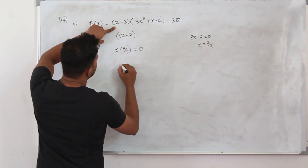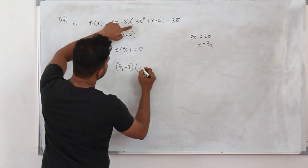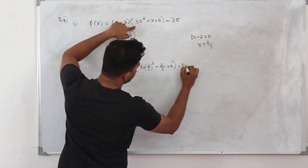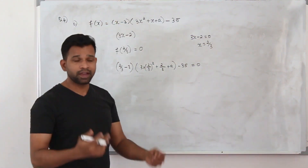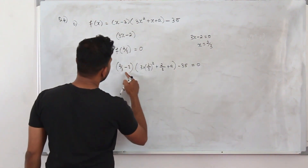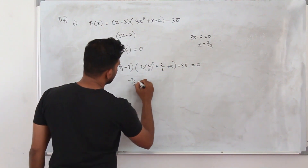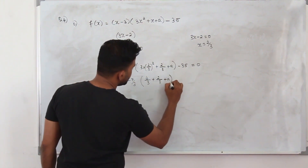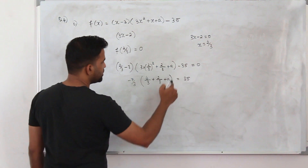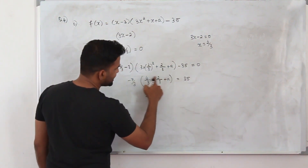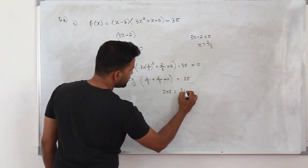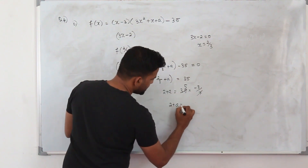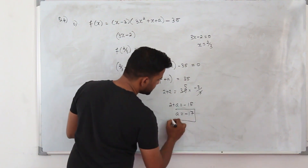Replace x with 2/3 everywhere. It becomes (2/3 minus 3) times (3 times (2/3)² plus 2/3 plus a) minus 35 = 0. Simplifying: the first bracket gives minus 7/3. Inside: 3 into 4/9 cancels to 4/3, plus 2/3, plus a. That gives 6/3 = 2, so 2 plus a equals 35 minus ... bringing terms across: 2 plus a = minus 15, so a = minus 17.